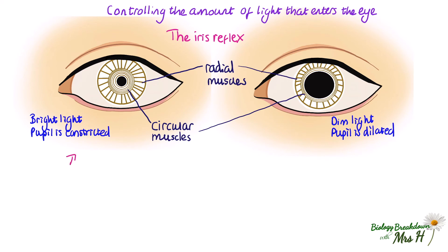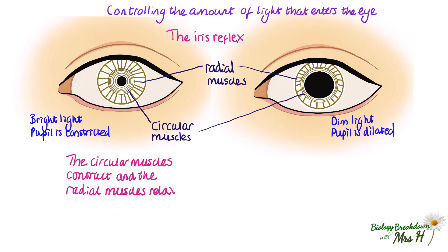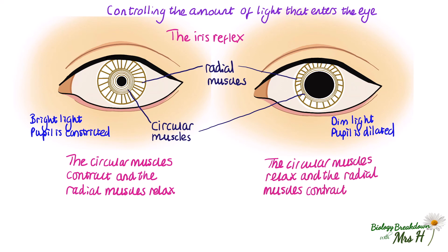In bright light, the circular muscles contract and the radial muscles relax. You can see that the circular muscles have got tighter and the radial ones longer. The muscles work in opposite ways — when one contracts the other relaxes and vice versa. In dim light, the circular muscles relax and the radial muscles contract. You can see that as the radial muscles contract, they pull the iris open more. Note that not all exam specifications require you to know the details of the radial and circular muscles, so do check your specification.